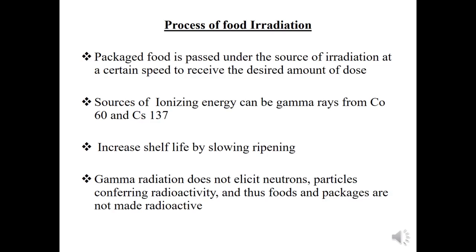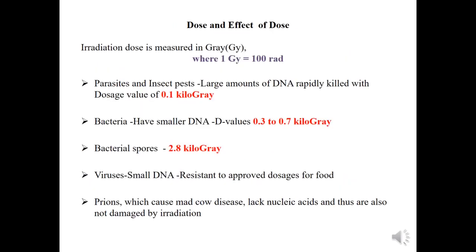The irradiation dose is measured in gray, where 1 gray equals 100 rad. Parasites and insects are killed by 0.1 kilogray. They have a large amount of DNA, so it is easily denatured at this low dose.